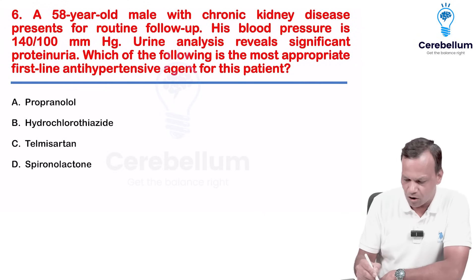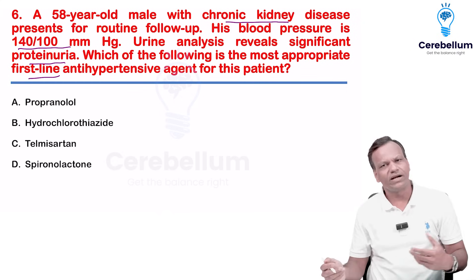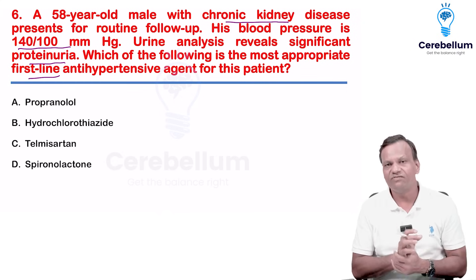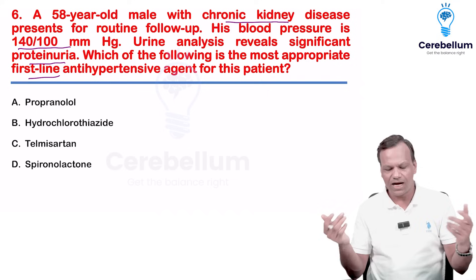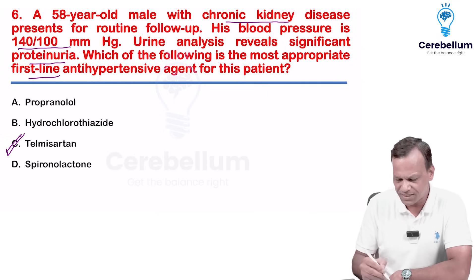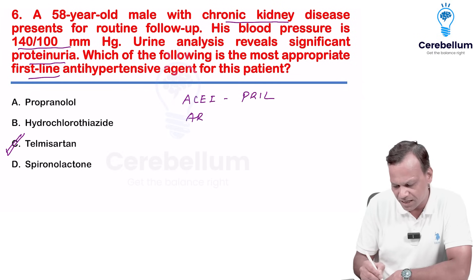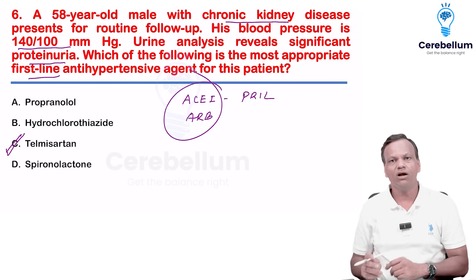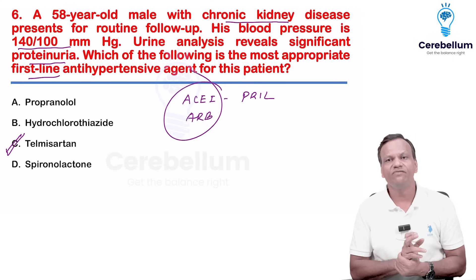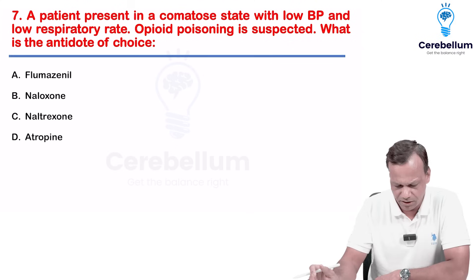A patient has chronic kidney disease with hypertension and proteinuria — first-line treatment. The drug of choice for CKD with proteinuria is an ARB (SARTANs) or ACE inhibitor (PRILs). These are the drugs of choice for CKD with proteinuria to treat hypertension.